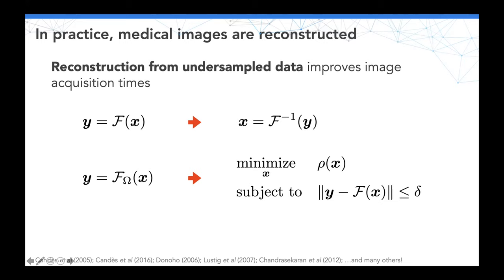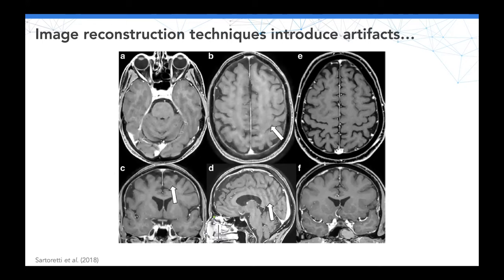One popular reconstruction technique is compressed sensing, proposed about 15 years ago. You acquire only a subset of Fourier coefficients, then find the image that minimizes a criterion — such as sparsity in the wavelet domain — subject to data consistency constraints. The key issue is that image reconstruction techniques introduce artifacts. A clinical evaluation published by Sriram et al. 2018 showed that even high-quality reconstructions may have artifacts — strange oscillations in the brain that are not part of the brain's physiology — possibly acting as perturbations that lead to misclassification.